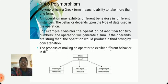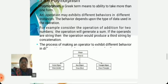consider the operation of addition for two numbers. The operation will generate a sum. If operands are strings, then the operation would produce a third string by concatenation. The process of making an operator exhibit different behavior in different functions is polymorphism.